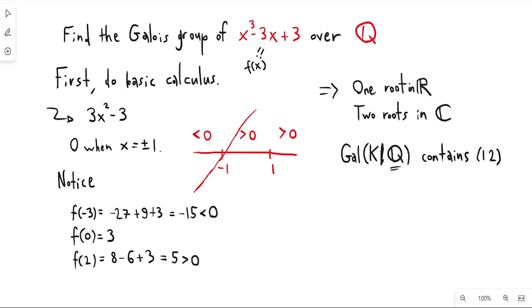And then I know that the Galois group in this case is going to be a subgroup of S3. That's just because the Galois group permutes the roots of my polynomial, and it's a degree 3 polynomial, so it has three roots. And I also know that the Galois group is transitive in this case.